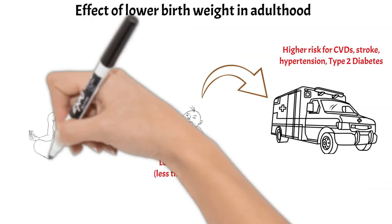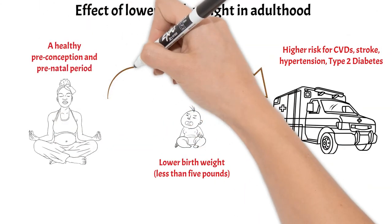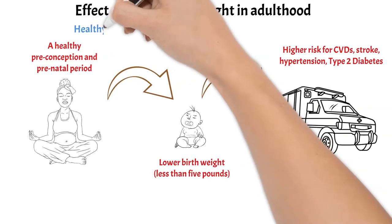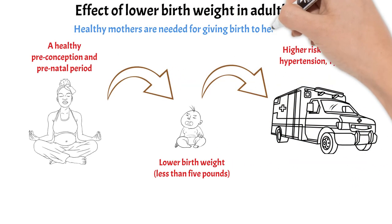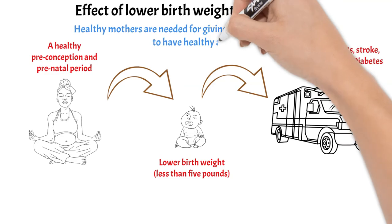Thus a healthy preconception and prenatal period is important for a healthy birth weight. Hence, healthy mothers are needed for giving birth to healthy babies to have healthy adults.